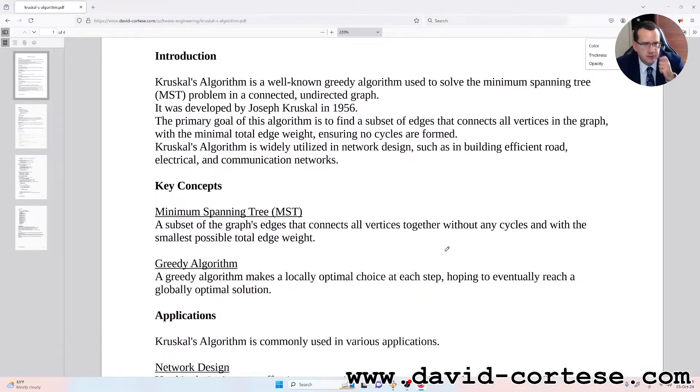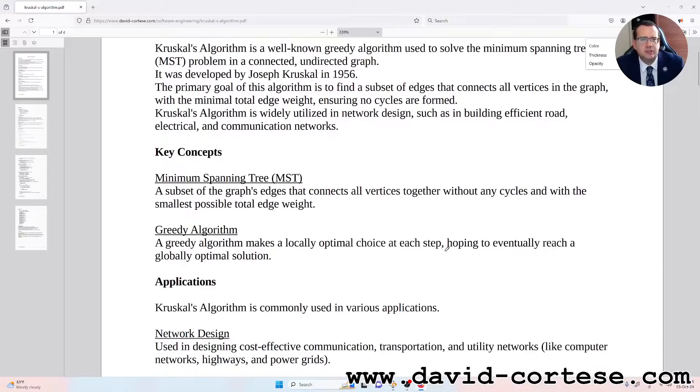Key concepts. Minimum spanning tree (MST): a subset of the graph's edges that connects all vertices together without any cycles and with the smallest possible total edge weight.